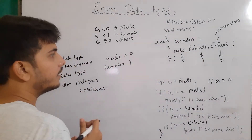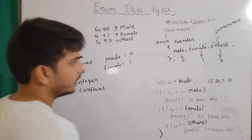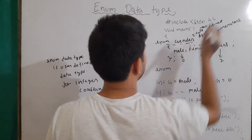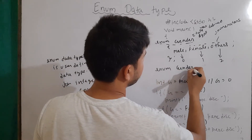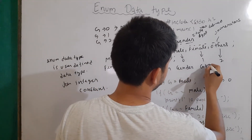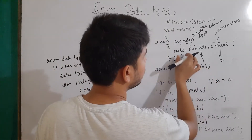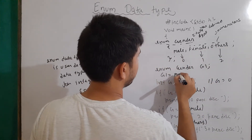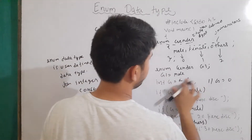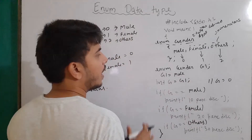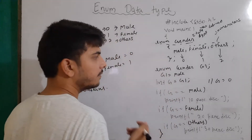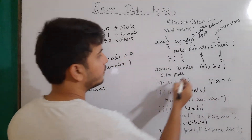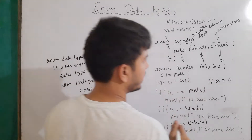Just like we can make structure variables, we can also make enum variables. Using enum as a data type — this is our user-defined data type — I'll write: enum gender, and make a variable with the name g1. Now g1 can only hold any values of the enumerator: male, female, or others. So I can write g1 equals to male. Or instead of writing g equals to male, I can write g equals to g1. Everything will have the same meaning. Multiple variables can also be made, for example g1, g2, just like we saw in the structure videos.